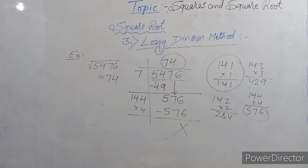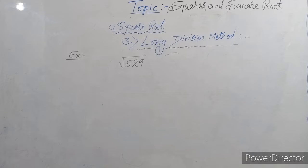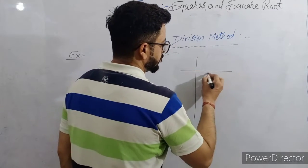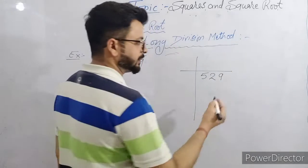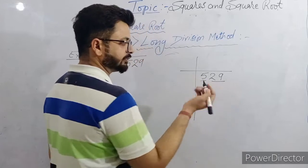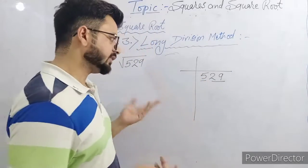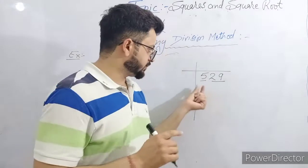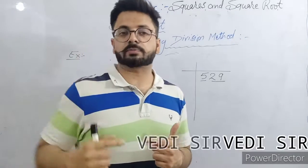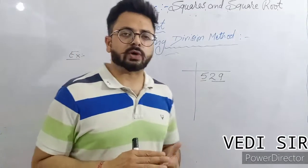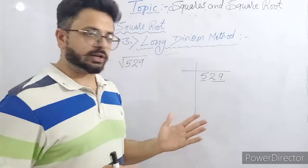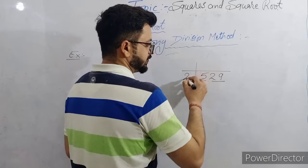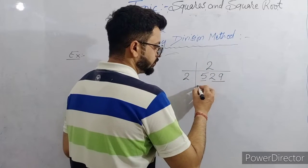If you become habitual with this method, you will solve all questions by this method only. Now one more example: find the square root of 529. The method is the same for every number. First we make the period from this side — one pair, and one digit is left, so the first period has only one digit, which is 5. From 5, the highest square we can subtract: one squared is 1, two squared is 4 — we can subtract; three squared is 9 — we cannot subtract. So the largest is 2 squared.